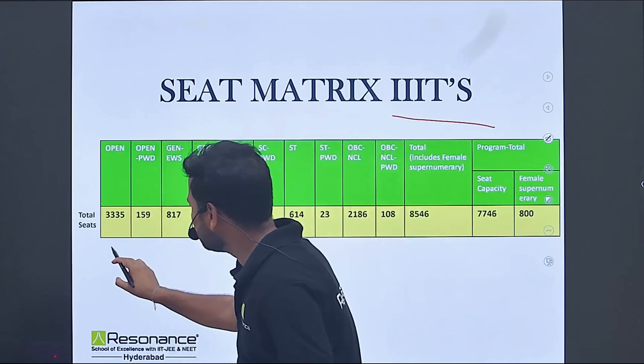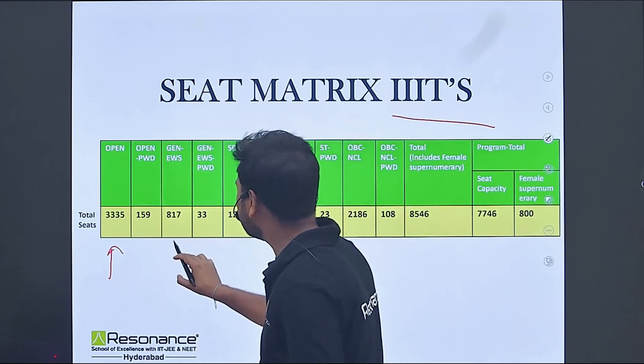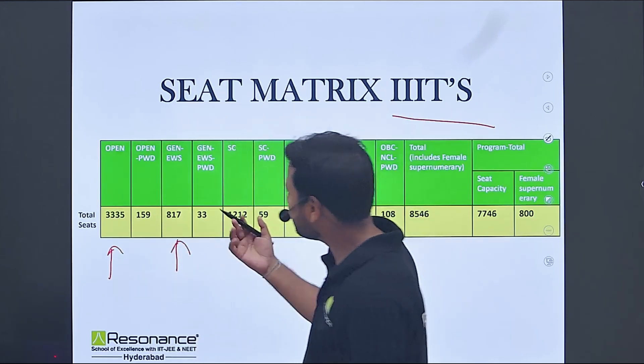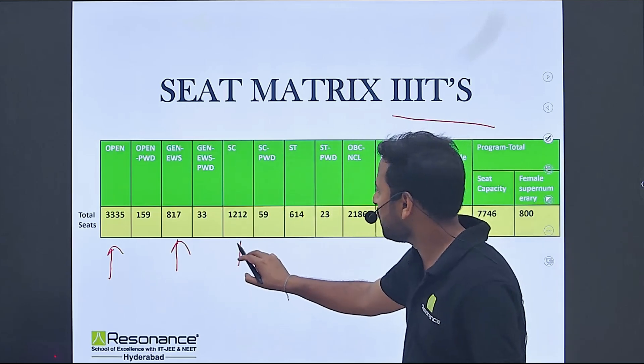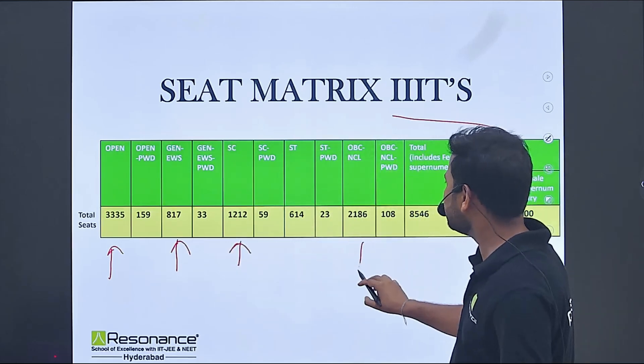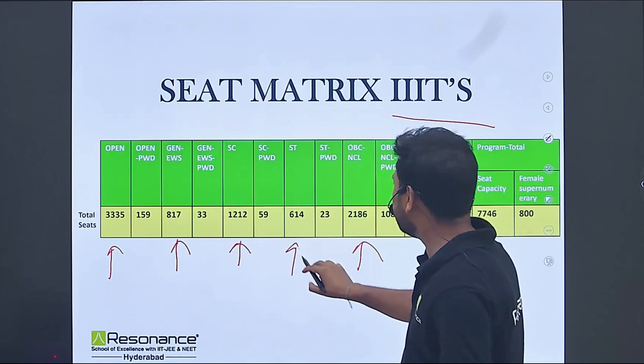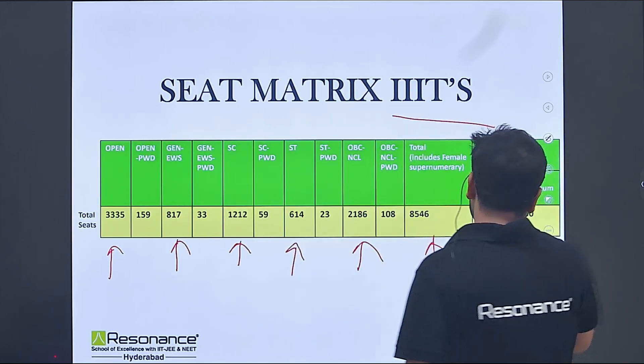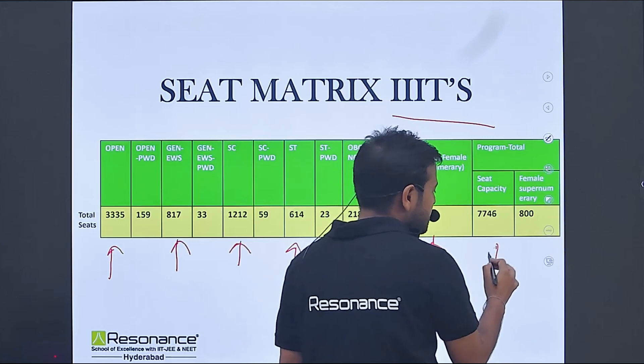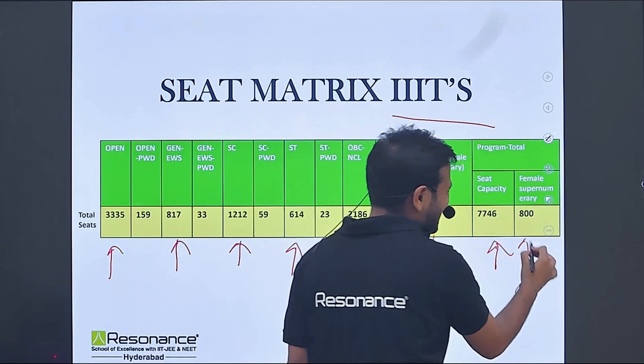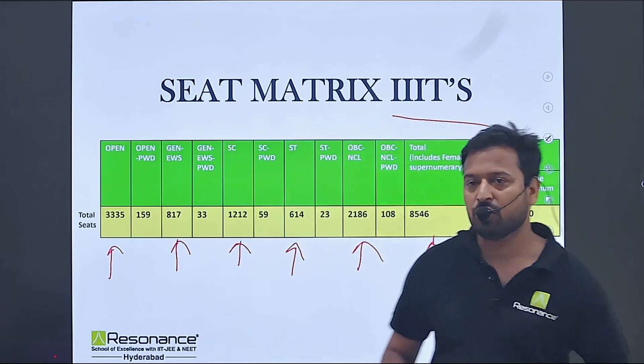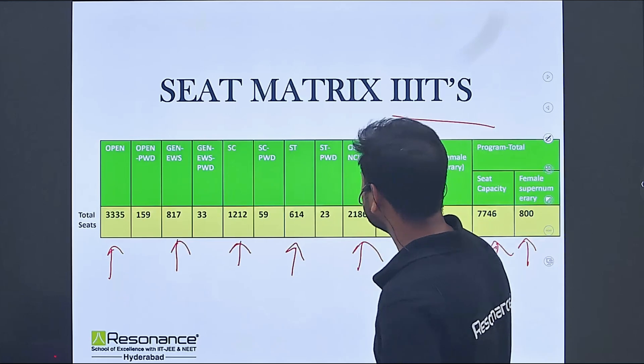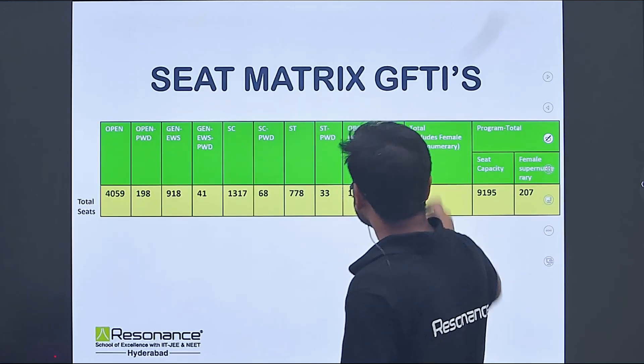For triple IITs, open category 3335, general EWS 817, SC 1212, OBC NCL 2186, ST 614, total including female supernumerary 8546, program total seat capacity 7746, and female supernumerary 800 seats.